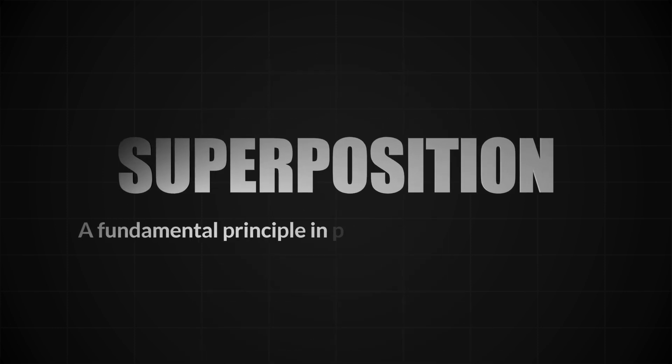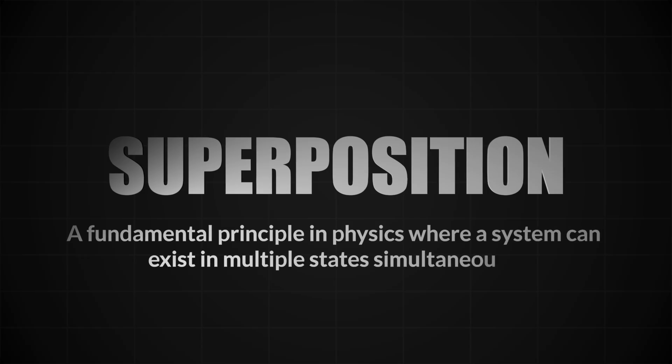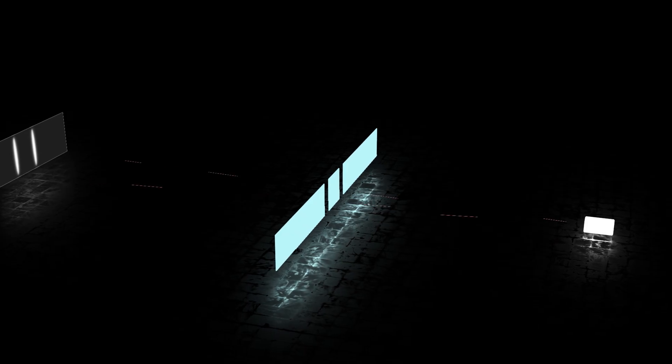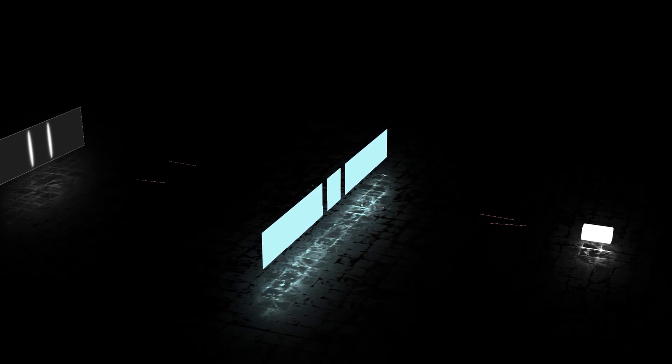First up, superposition, the idea that quantum objects can exist in two states at once. It's not something we see in everyday life, but we do observe its effects, most famously in the double-slit experiment.